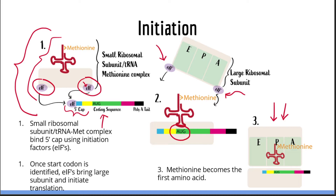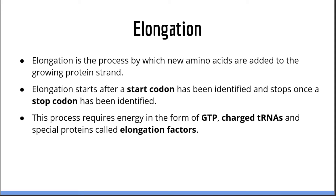Now let's talk about elongation, the second step of translation. Elongation is the process by which new amino acids are added to the growing protein strand. It starts after a start codon has been identified and stops once a stop codon has been identified. This process requires energy in the form of GTP, charged tRNAs, and elongation factors.